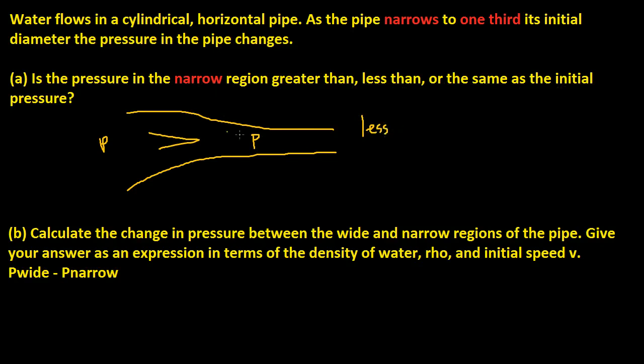If it's a greater region, if it gets greater like this, if the pipe goes like this and expands, then the pressure is going to be greater. So if it says greater region, greater than, less than, or the same as the initial pressure, then this would be greater.